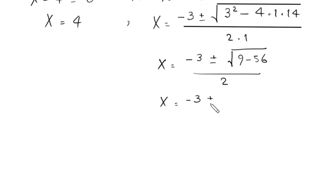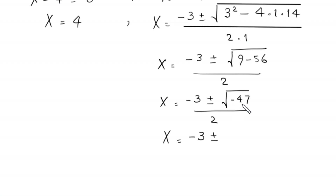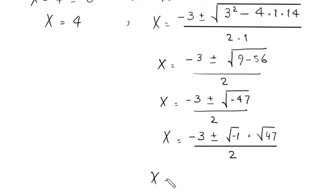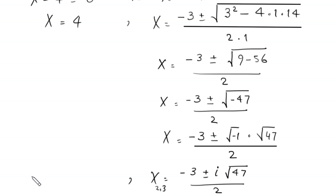Continuing the quadratic formula: x equals negative 3 plus or minus square root of 9 minus 56, which gives negative 47, divided by 2. Since the square root of negative 47 equals square root of negative 1 times square root of 47, we write x equals negative 3 plus or minus i times root 47, over 2. So the three solutions are x₁ equals 4, and x equals negative 3 plus or minus i times root 47, over 2.